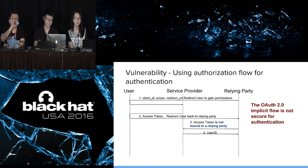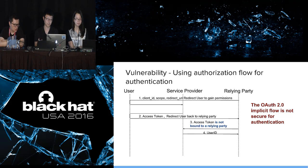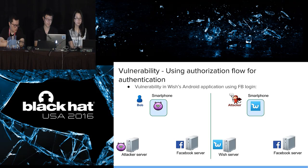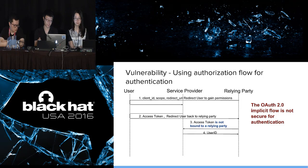When the relying party tries to use the access token to get user information from the service provider for authentication, step four returns the user ID from the service provider. The relying party uses that user ID as the identifier in their service. In this attack — which we demoed with Wish — an attacker has a malicious application. Bob uses this malicious application and authenticates with Facebook. Facebook legitimately returns Bob's access token to the attacker. Now the attacker logs into Wish using the attacker's own Facebook account. When Facebook returns the attacker's access token, the attacker intercepts and replaces it with Bob's access token. Wish asks Facebook who this user is using Bob's access token, Facebook returns Bob's user ID, and Wish logs the attacker into Bob's account.